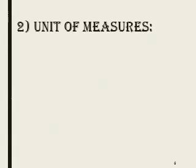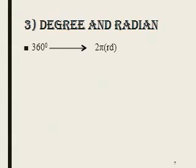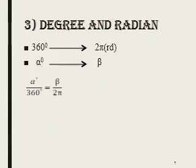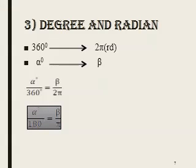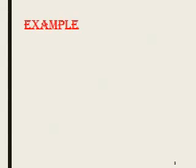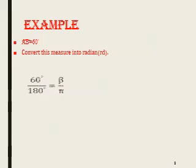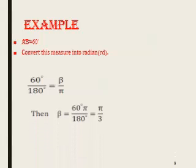Now, the units of measurement. You have to know that there are two units of measurement: the degree and the radian. The rule is 360 degrees equals 2 pi. So alpha over 360 equals beta over 2 pi, or equivalently alpha over 180 equals beta over pi. You can convert from degrees to radians and vice versa. For example, suppose I have the angle 60 degrees and I need to express it in radians. Applying the rule: 60 over 180 equals beta over pi. Cross multiplication gives 60 pi over 180, which simplifies to pi over 3.